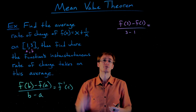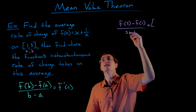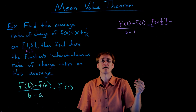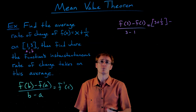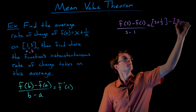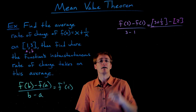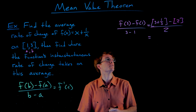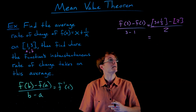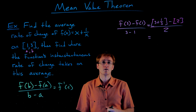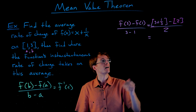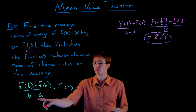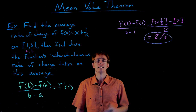Our function f is x + 1/x, so f(3) = 3 + 1/3. We subtract f(1): plugging in x = 1 gives us 2. We divide by the length of our interval, 3 − 1 = 2. So 3 and 1/3 minus 2 is 1 and 1/3, or 4/3. Then 4/3 divided by 2 gives us 2/3. The average rate of change of our function on the interval from 1 to 3 is 2/3.